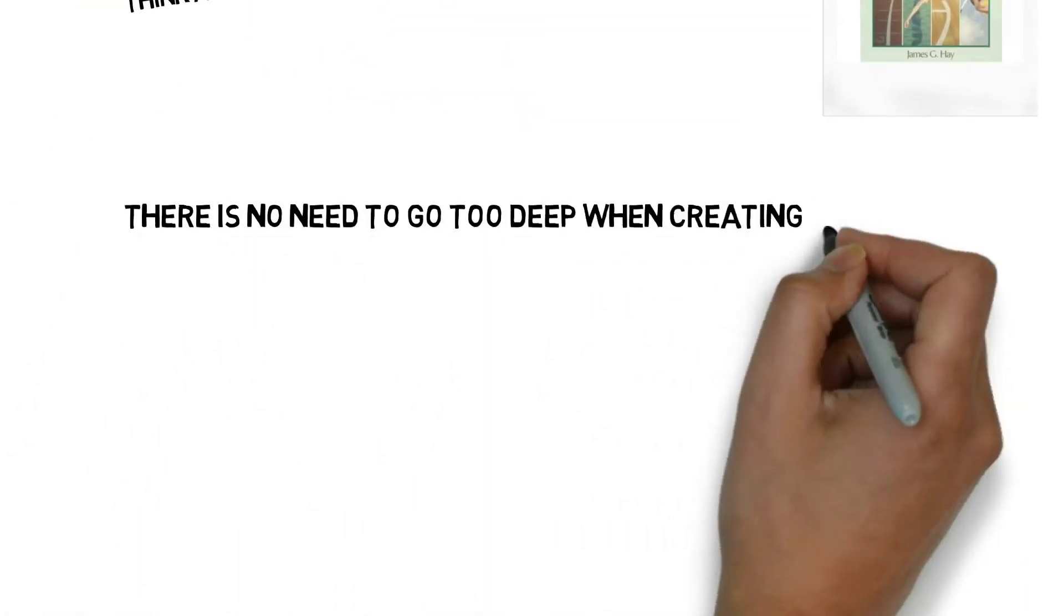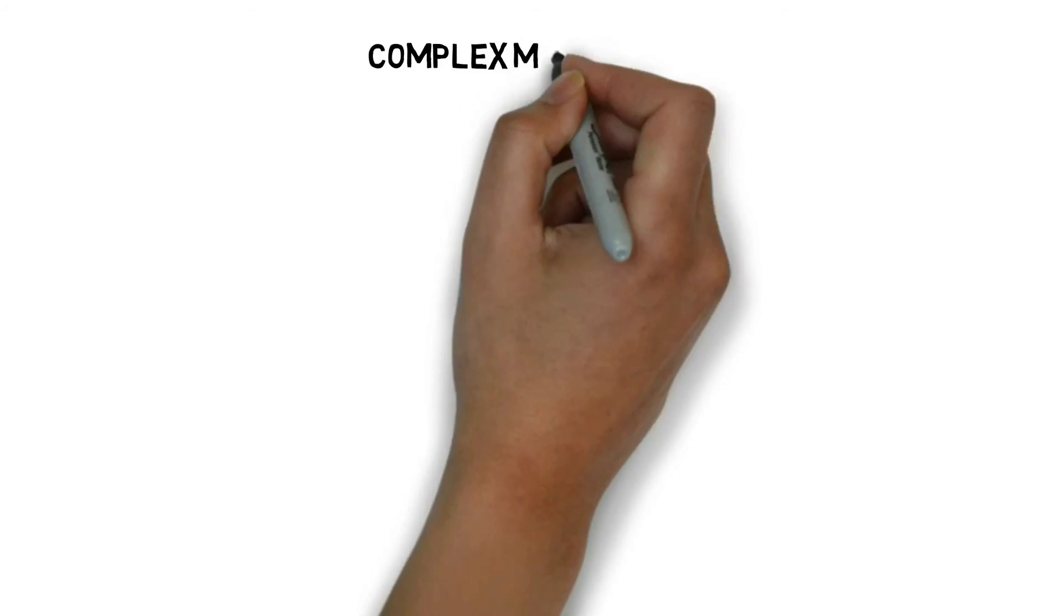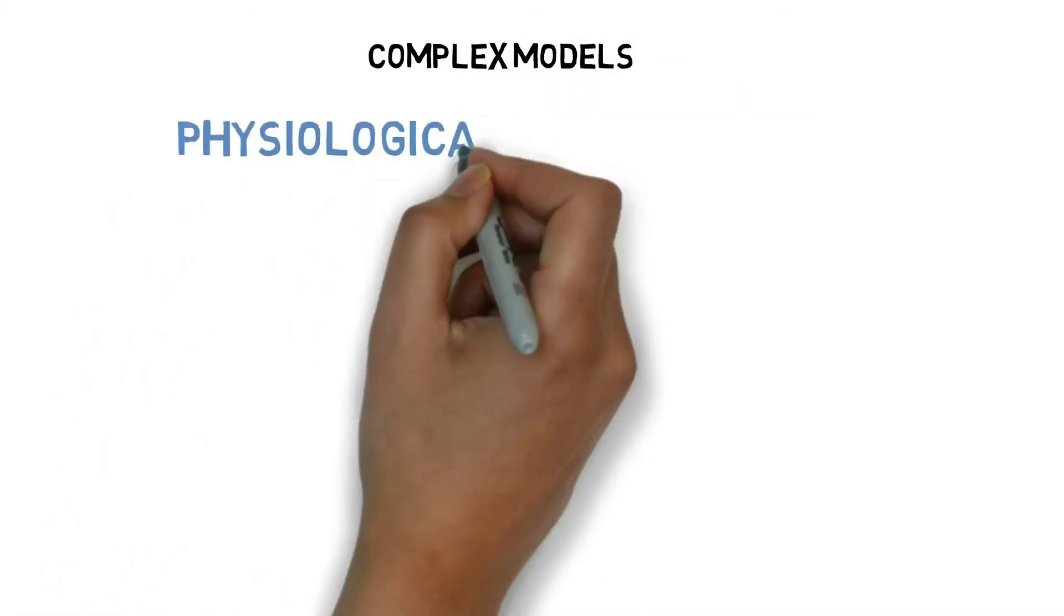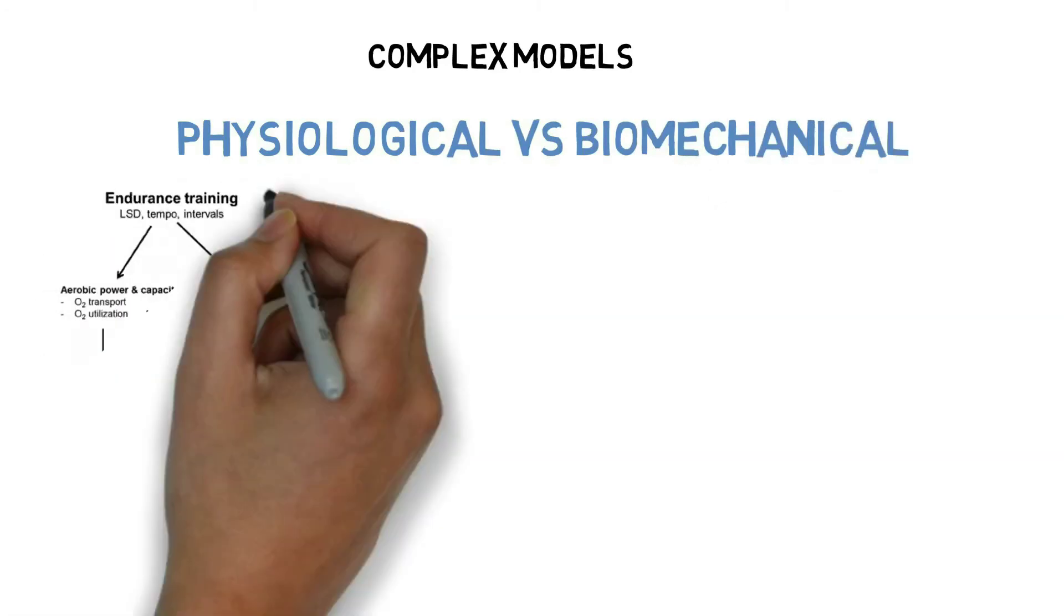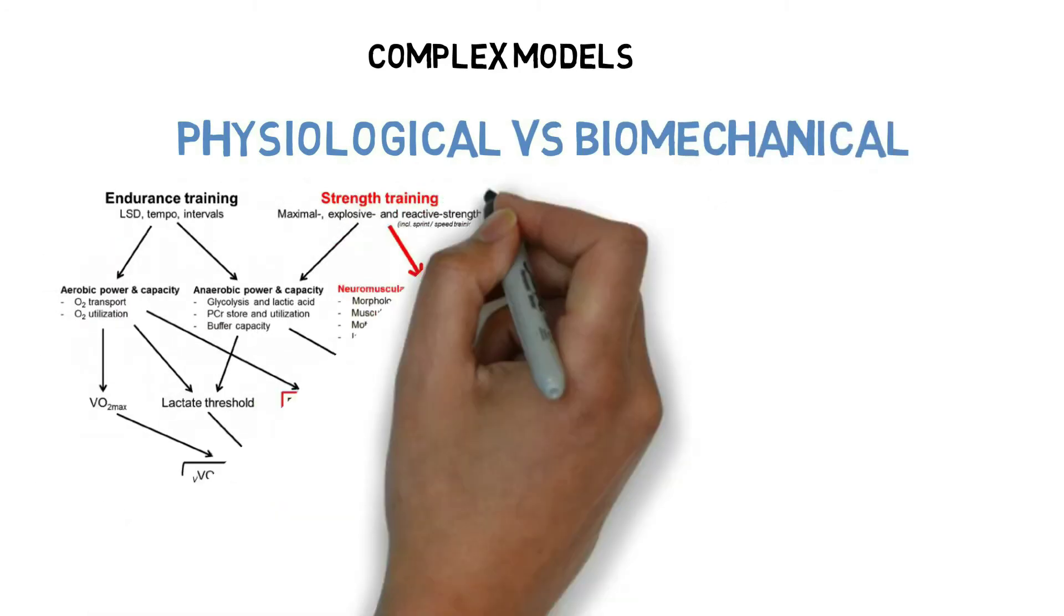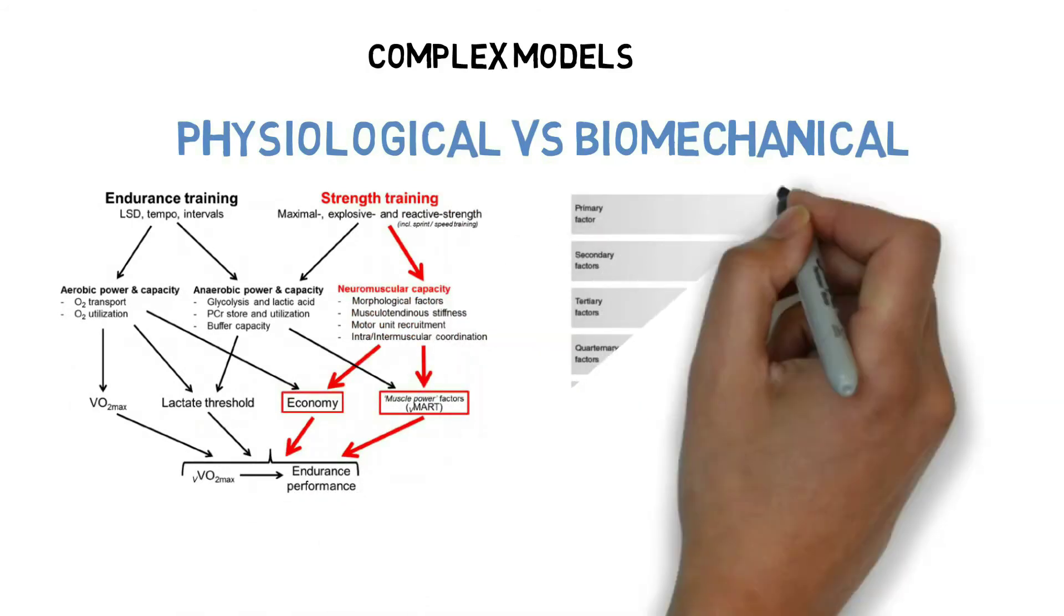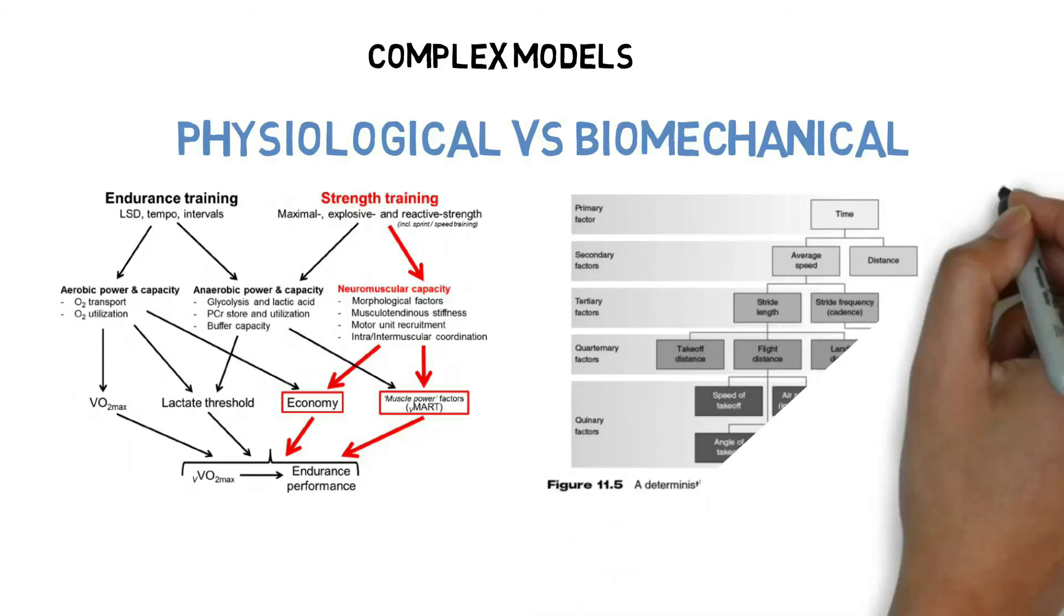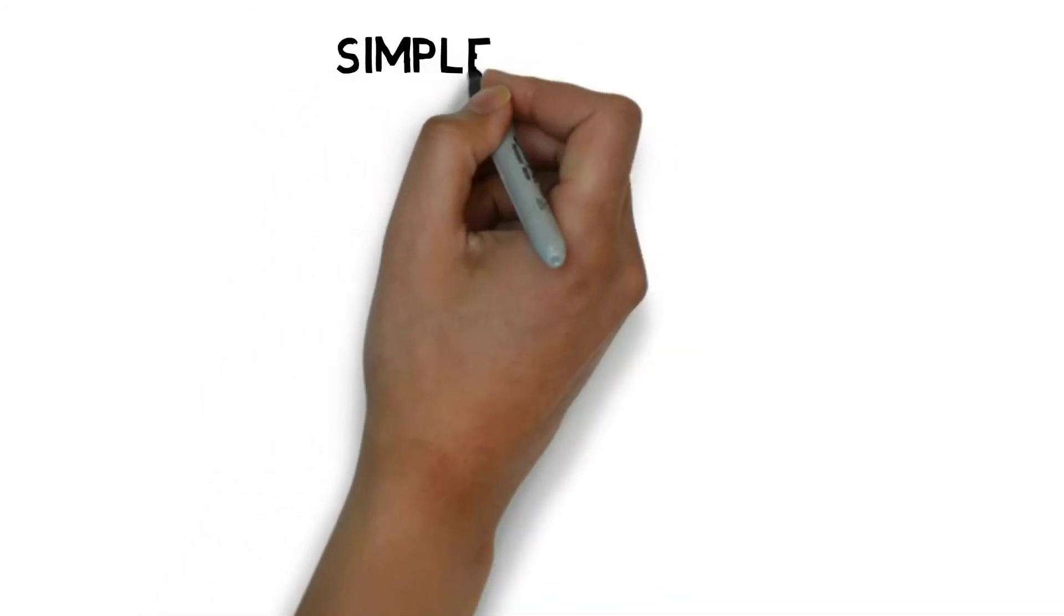There is no need when you're creating these models to go too deep. Think about what it is that you can easily control. So here we have examples of very deep or complex models, both physiological and biomechanical. These models are really good at picking apart the mechanistic variables of performance, the real specifics that sports scientists are concerned with and how they impact performance. The good thing about them is that they're thorough, but they're not very practical.